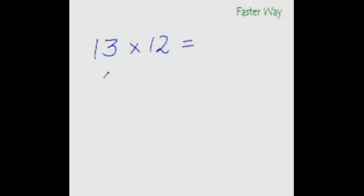In order to multiply 13 with 12 quickly, all you need to do is add this digit to this entire number. So 2 plus 13 is 15 and you have the first two digits of your answer.